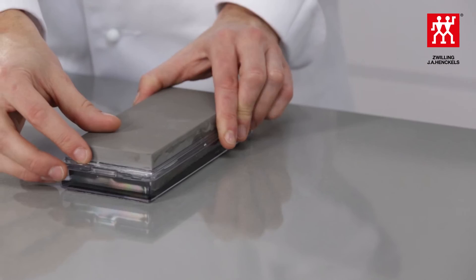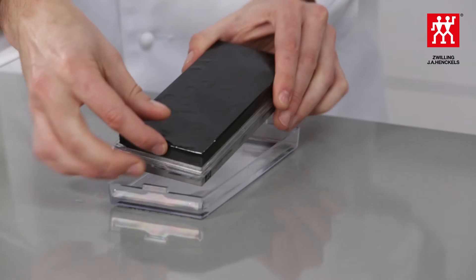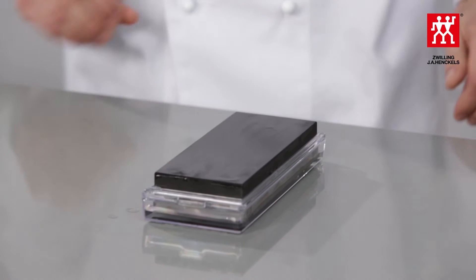Twin Stone Pro stones do not need a long wetting time. Simply pour a little water into the tray of the Twin Stone Pro. Briefly lay the coarse-grained side of the stone in the water until no dry patches are visible.